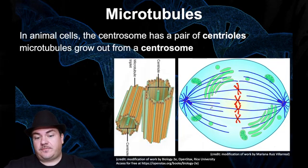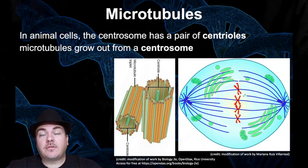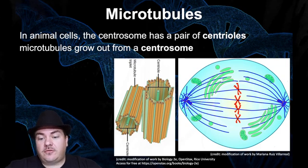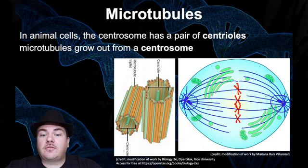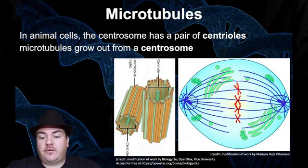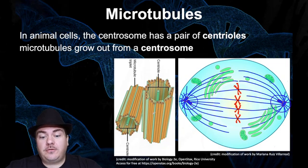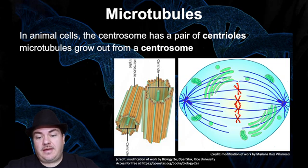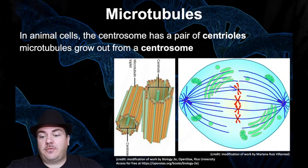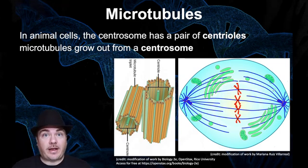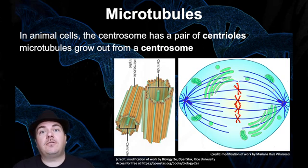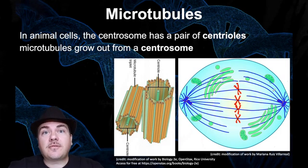A little more detail: there are structures called centrosomes — you can see one on each side in the diagram. Centrosomes are built out of a pair of centrioles. Each centriole is a rod-shaped structure, and the two centrioles make a centrosome. These centrioles are built out of tubulin microtubules. Tubulin microtubules grow from the centrosome, attach to the chromosomes, and pull them to two opposite sides of the cell. So tubulin microtubules make up the centrioles, which make up the centrosome, which is responsible for chromosome separation during cell division.